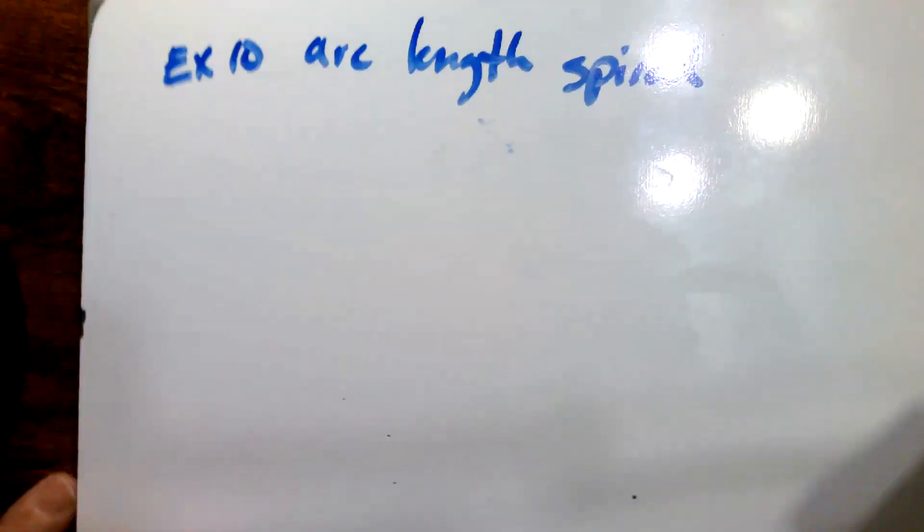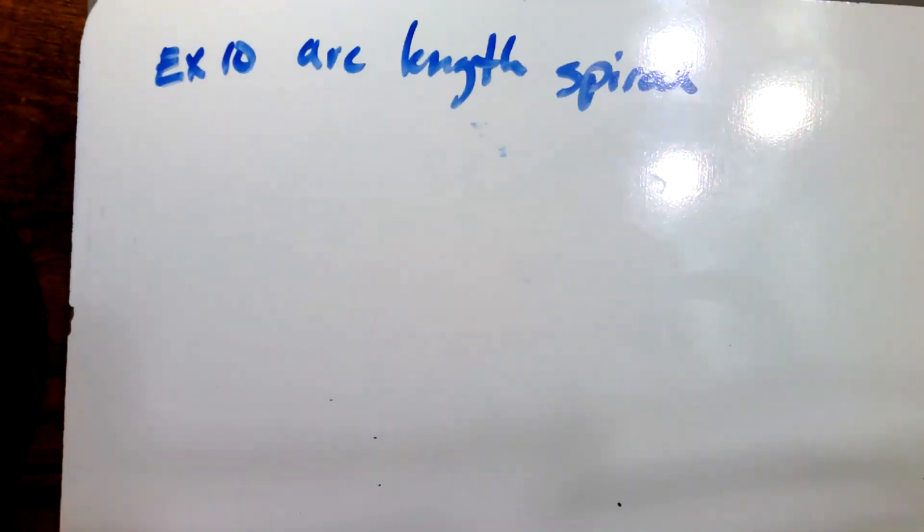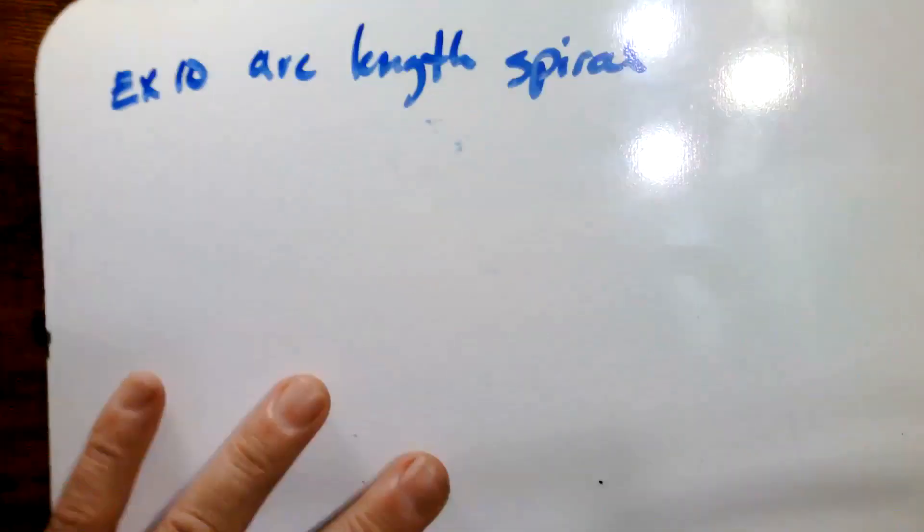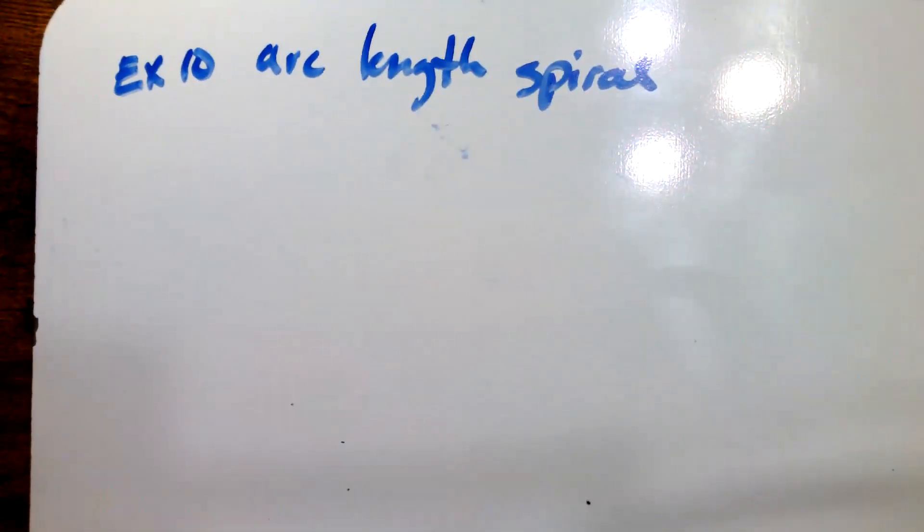Let's see. Welcome back. This is example 10. And so in this example, what we're going to be looking at is finding the arc length of the spiral of Archimedes.